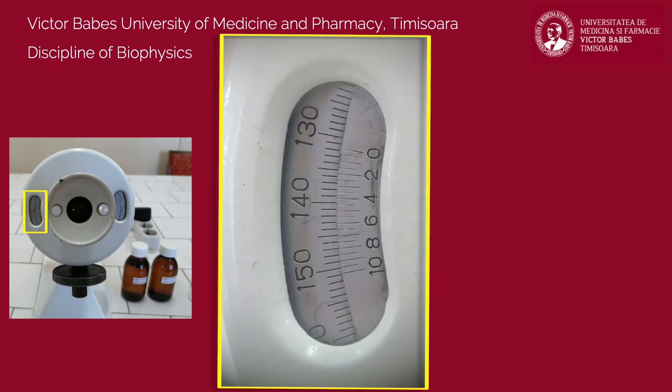See which two values of the external scale are neighboring the zero mark on the internal one. Among the two, pick the lower one, which will represent the integral value of the rotation angle. Then, look for a position at which the divisions on both scales are perfectly aligned. At this position, the value marked on the internal scale will represent the decimal value of the rotation angle.